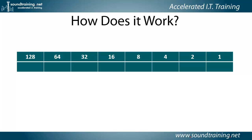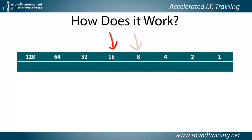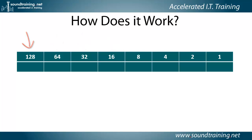How does it work? Well, every bit has a corresponding decimal value, ranging from 1, to 2, to 4, to 8, to 16, to 32, to 64, to 128. To determine the decimal value of the byte, we simply add up the decimal values of each of the bits that are turned on.